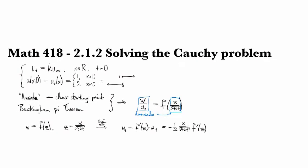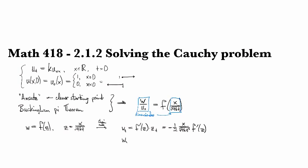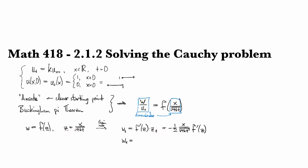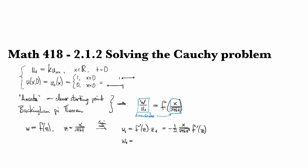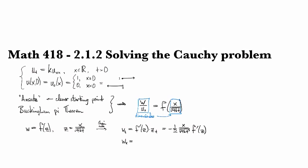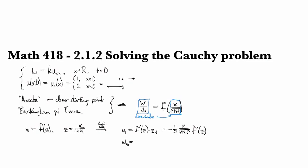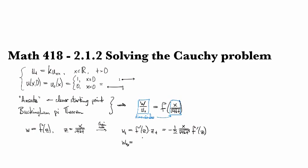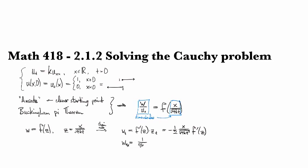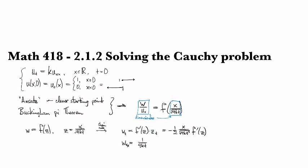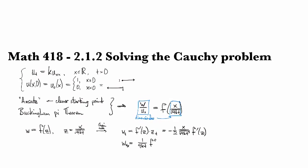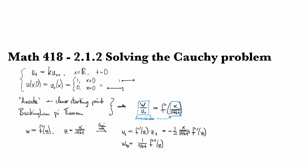And the derivative for X is a little simpler because each time you differentiate, it's just going to kick out a copy of 1 over square root 4KT. So if we do that twice, we'll get 1 over 4KT times F double prime.